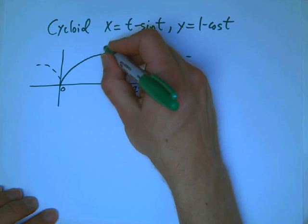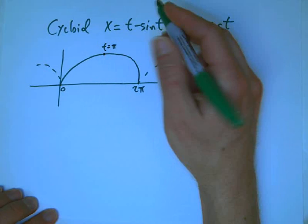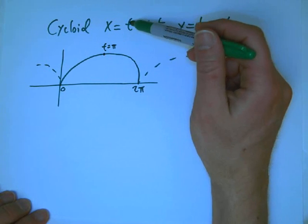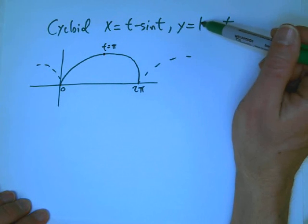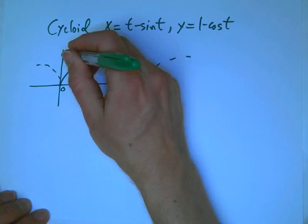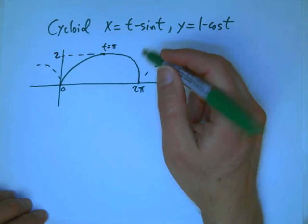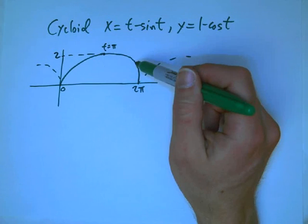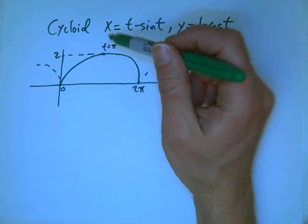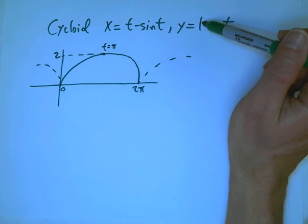Because again, sine of 2π is 0, so x is now 2π. And y is back to 0. When t is π, then x is π minus 0, so that's π. And this is 1 minus minus 1 is 2. And we want to know how big this area is.